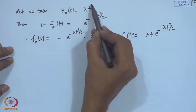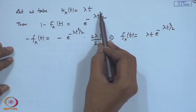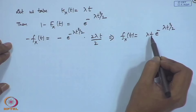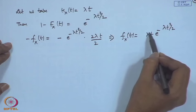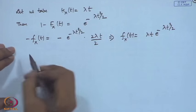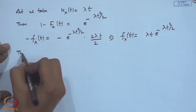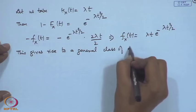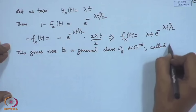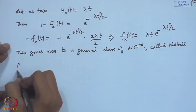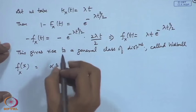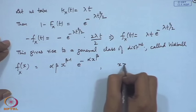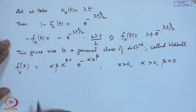Taking a more general power λt^k gives densities of the form λt^k · e^(−λt^(k+1)/(k+1)). This gives rise to a general class of distributions called Weibull distributions, with density f(x) = αβx^(β−1) e^(−αx^β) for x > 0, where α and β are positive parameters.